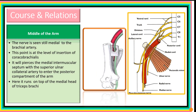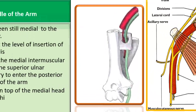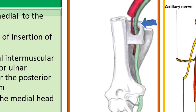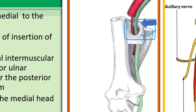At the mid-arm, the nerve remains in the anterior compartment, medial to the brachial artery. This midpoint corresponds to the level of insertion of the coracobrachialis. At this point the nerve pierces the medial intermuscular septum and begins running with the superior ulnar collateral artery, a branch of the brachial artery. Both then enter the lower half of the arm, passing from the anterior to the posterior compartment.